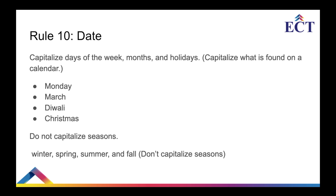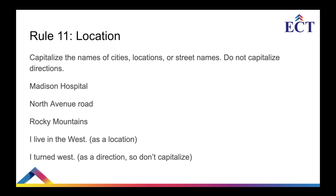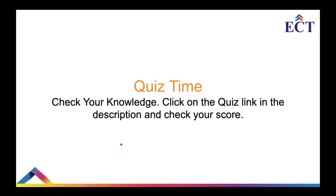Rule ten: capitalize days of the week, months, and holidays — anything found on a calendar, like Monday, March, Diwali, Christmas, any festival or holiday name. Do not capitalize seasons — winter, spring, summer, and fall are not capitalized. Rule eleven: capitalize the names of cities, locations, or street names, but do not capitalize directions. 'I live in the West' — this is a location, so 'W' is in capital. But 'I turn west' or 'I turn south' — these are directions and are not capitalized.